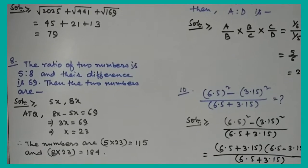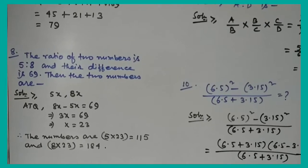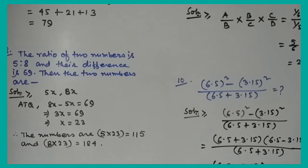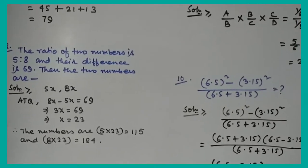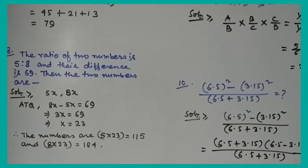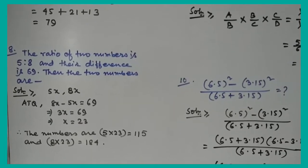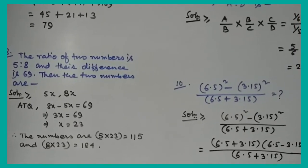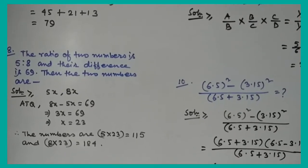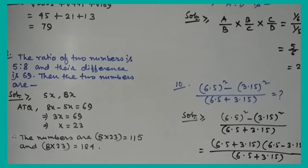Question number 8: The ratio of two numbers is 5:8 and their difference is 69. Find the two numbers. Let the numbers be 5x and 8x. Then 8x − 5x = 3x = 69, so x = 23. The two numbers are 5×23 = 115 and 8×23 = 184.